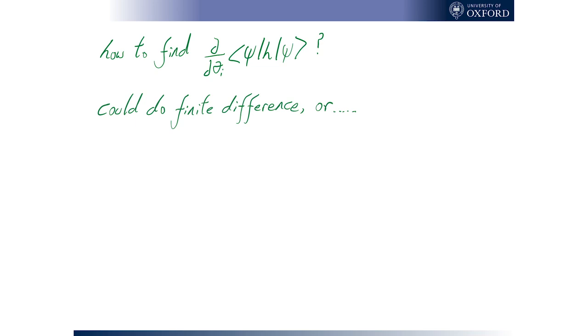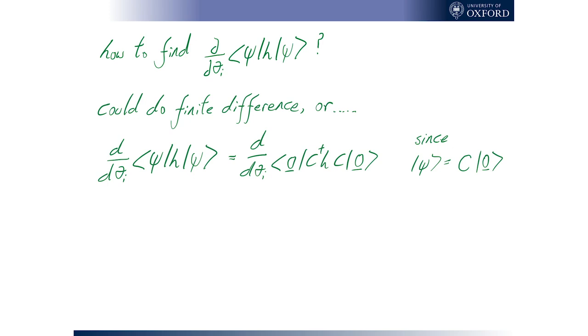And how do we do that? A simple way to do it would be finite difference. We could just set up our circuit with one set of parameters, run it a bunch of times until we've figured out this expected value, then tweak one of the parameters and run it a bunch more times. But that's not a great way to do it, because we would be trying to look at a small difference between two quantities that are quite time consuming to sample.